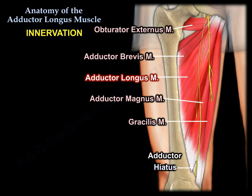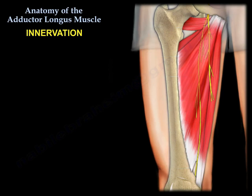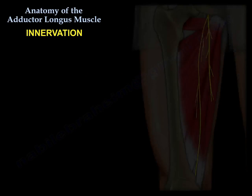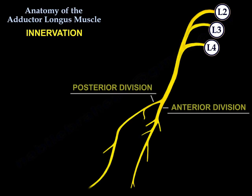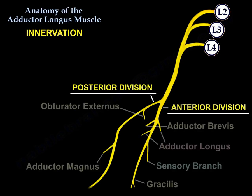Here is a diagram showing the obturator nerve, the anterior and the posterior divisions, and the muscles supplied by each division.